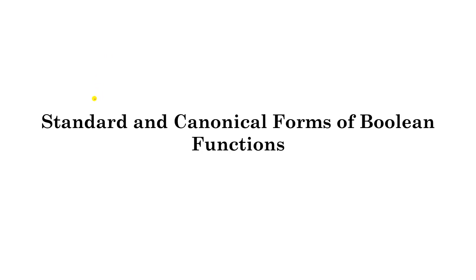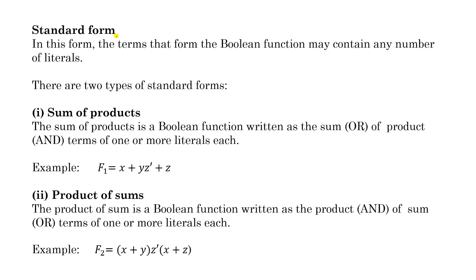In this lecture we will discuss standard and canonical forms of boolean functions. In standard form, the terms that form boolean functions may contain any number of literals. For example, x is one literal, x dash is one literal, and similarly y and y dash are one literal each. There are two types of standard forms.